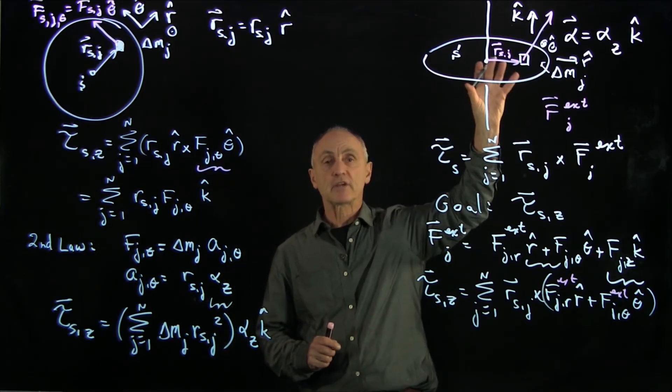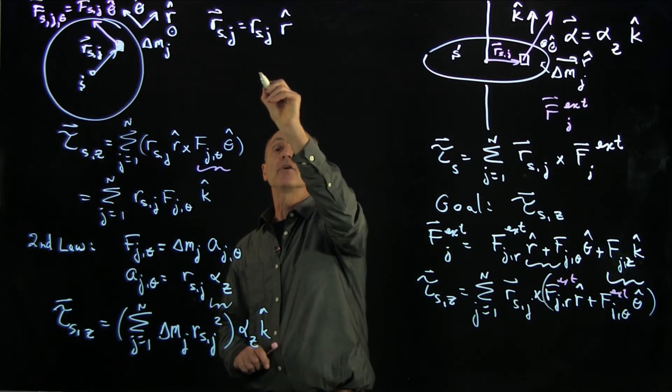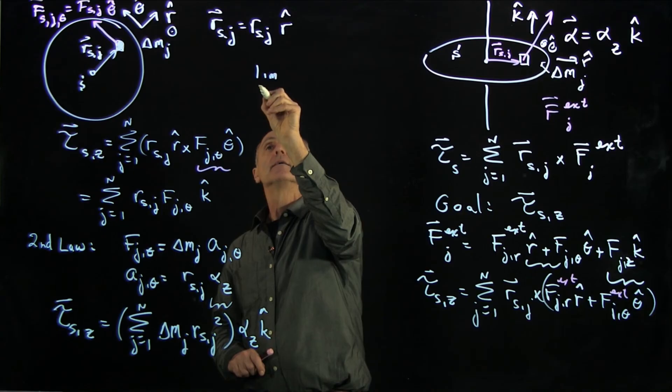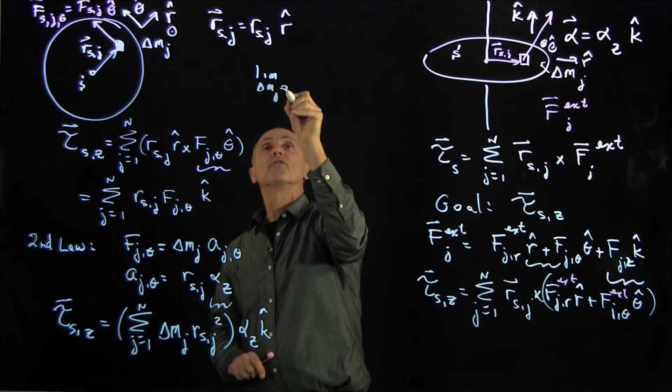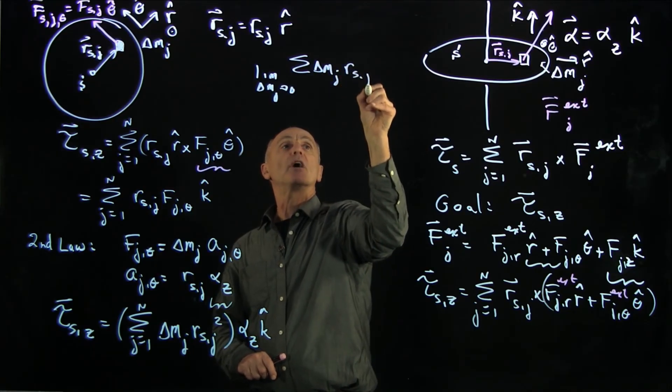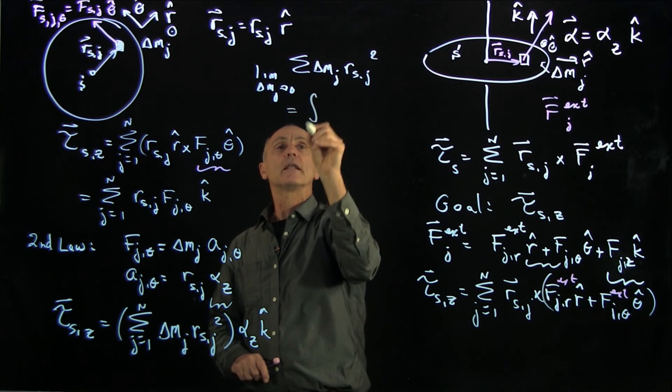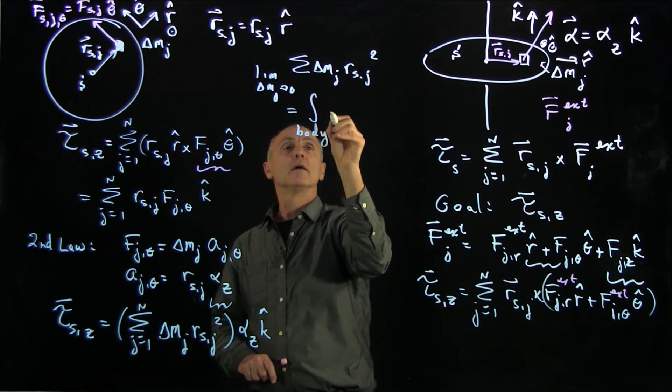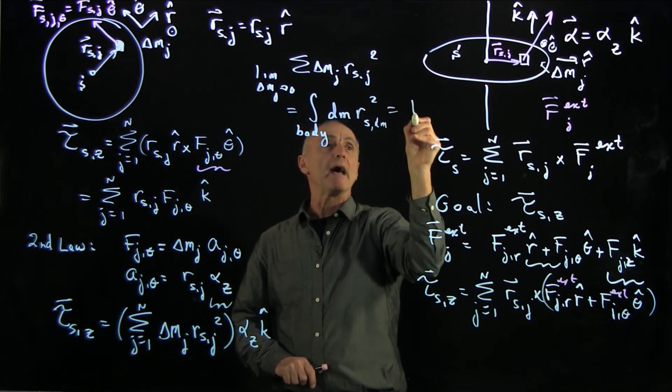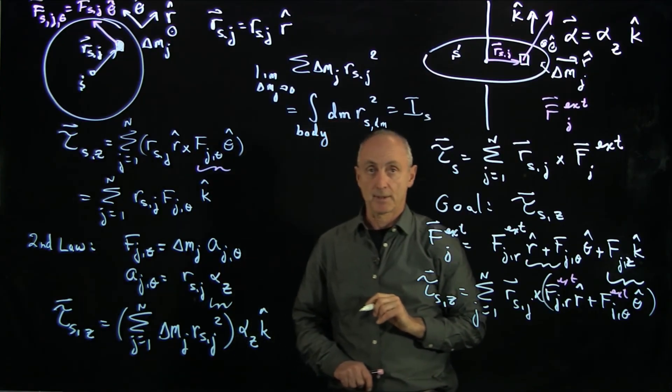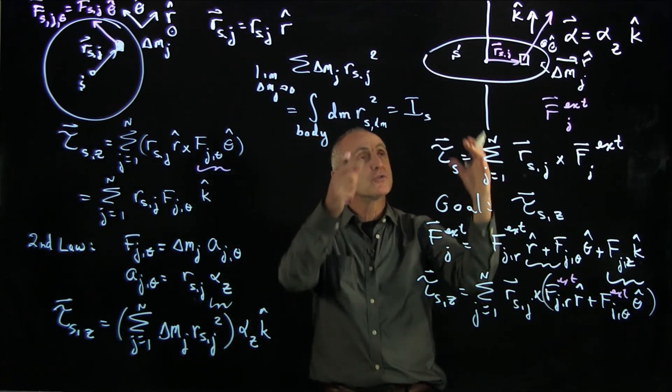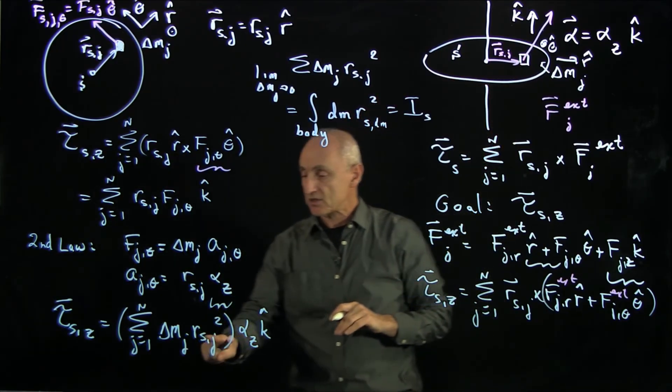Now, because we have a continuous body, we have to again consider a limit. So let's call the limit as delta m_j goes to 0 of this sum, delta m_j r_sj squared. Well, that's an integral over the body of dm r_s squared. And we identified that before as the moment of inertia about the z-axis.